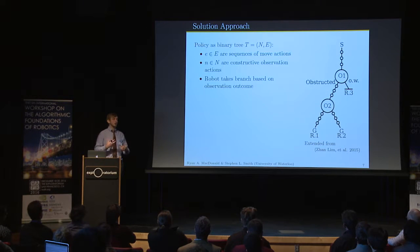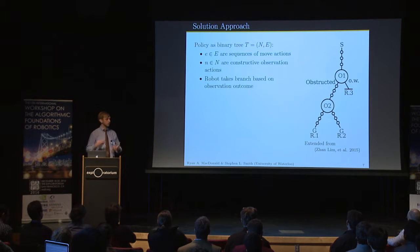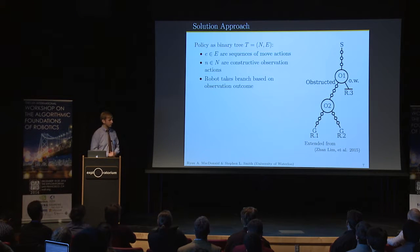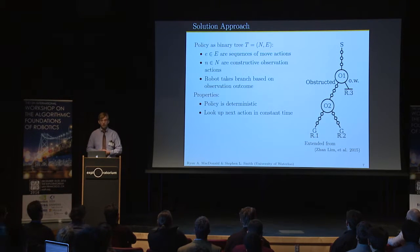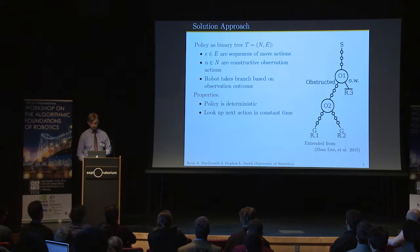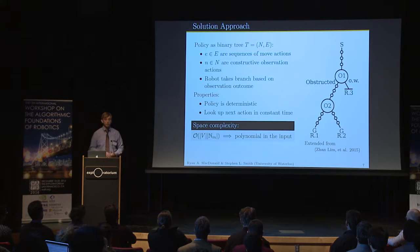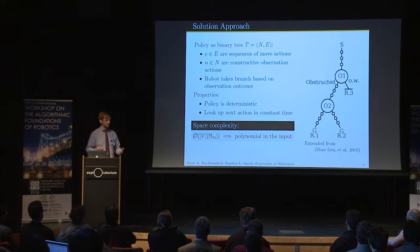Our encoding uses edges as sequences of move actions, and the observations are constructive observations. The robot knows which particular edge to take after the outcome of an observation. This gives two important properties: first, the policy is deterministic; and second, the lookup for the next action can be done in constant time — important because some of our applications have real-time constraints. We prove there is an optimal policy of this form, encodable within polynomial space.